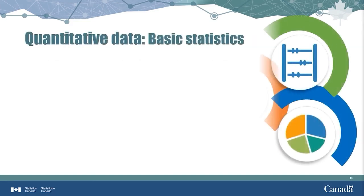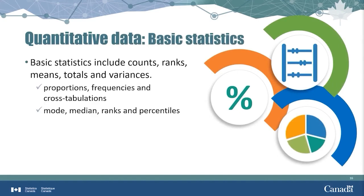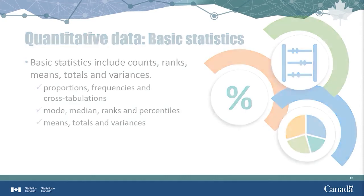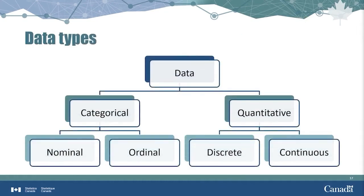There are many basic statistics that can be used with quantitative data. In fact, all of the basic statistics shown on this slide can be used in a meaningful way with quantitative data. Remember that data can be categorical or quantitative. Categorical data can be nominal — labels only — or ordinal, having a particular order. Quantitative data can be discrete, things we count, or continuous, which are things we measure. The next slide provides examples of different types of data, and you will have to determine the data type: nominal, ordinal, discrete, or continuous.